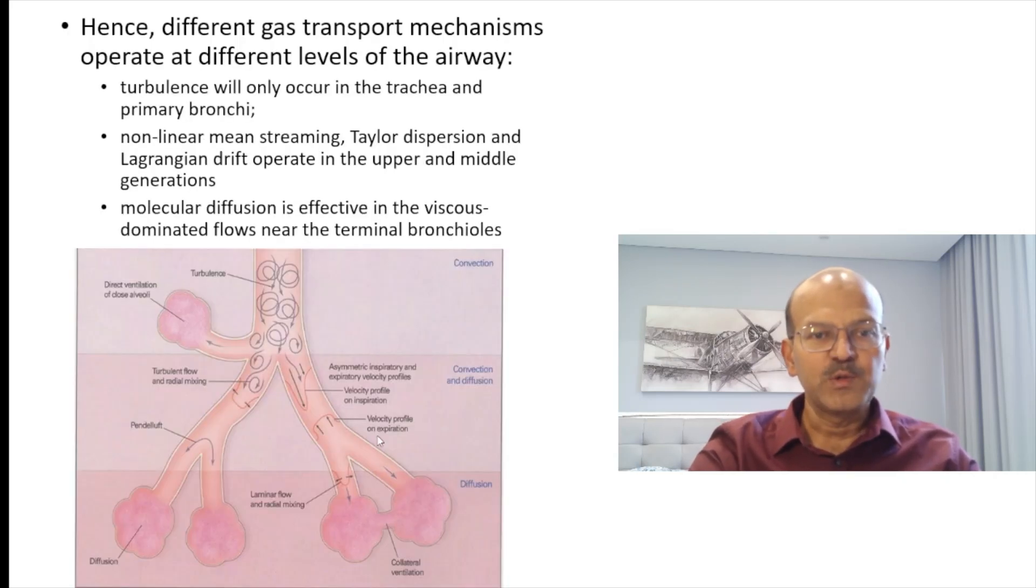This gives you an illustration of how different gas transport mechanisms are operating at different levels of the airway. Turbulence will occur mainly in the trachea and the primary bronchi. This is the turbulent gas and this leads to turbulent diffusion. Non-linear mean streaming, Taylor dispersion, and Langrangian drift operate in the upper and middle layers. The pendulift effect comes in between the distal and the middle parts. Molecular diffusion is effective in the viscous-dominated flows near the terminal bronchioles.